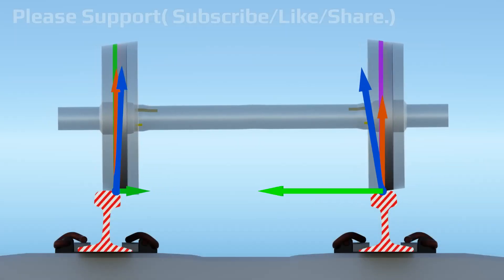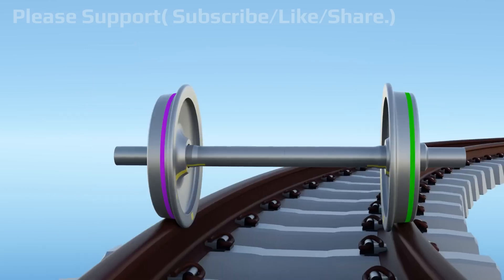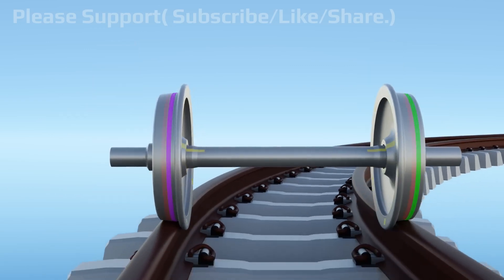During this, net horizontal force will be acting against centrifugal force. When straight rail section arrives, this net force will help to shift the wheel set back to normal position on the track.